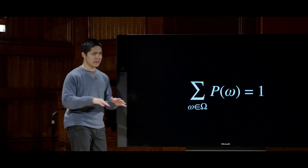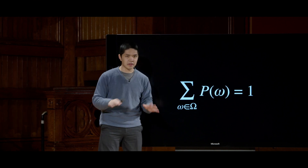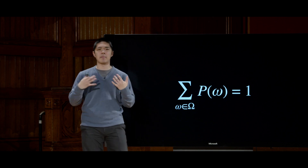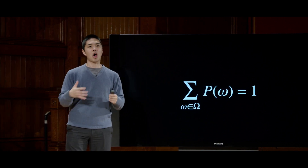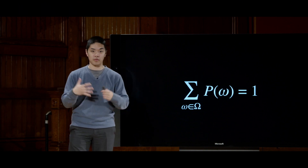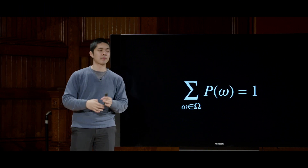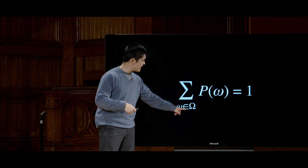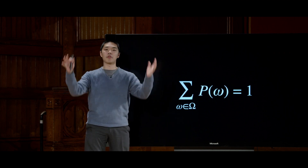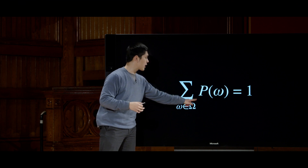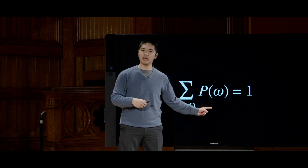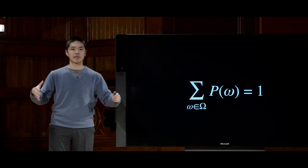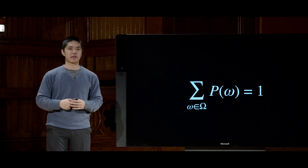The other key rule for probability involves summation notation. If I sum up all of the possible worlds in the set of all possible worlds and add up all of their probabilities, I get the number 1. So all probabilities must sum to 1. For a fair die with numbers 1 through 6, each roll has an equal probability of 1/6. Each probability is between 0 and 1, and if you add up all six probabilities, you get 1.